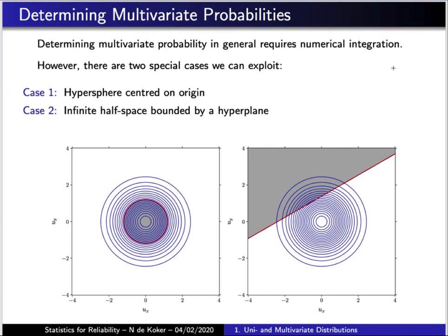Now we mentioned that the probability can be determined in the one-dimensional case by evaluating the area under the probability distribution function or in the case of the normal distribution using pre-existing evaluations of the error function. Now in general, in the multivariate case, we again have to apply numerical integration, but this is more challenging now as we have to perform the integration in multiple dimensions. However, there are two special cases that we can very easily exploit that I'm going to explain here.